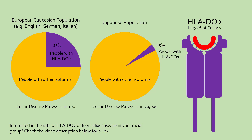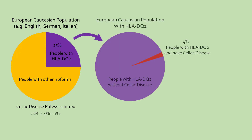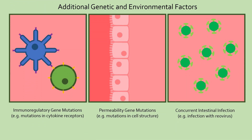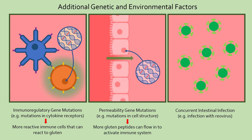Interestingly, not all people with HLA-DQ2 or DQ8 develop this disease. For example, only 4% of Caucasians with HLA-DQ2 develop celiac disease. Why is this the case? While the specifics are not well understood, scientists agree that additional genetic and environmental factors play a huge role. Mutations in immunoregulatory genes may make immune cells more reactive, and perhaps other mutations make the intestinal epithelium more permeable, allowing easy entry by gluten peptides.